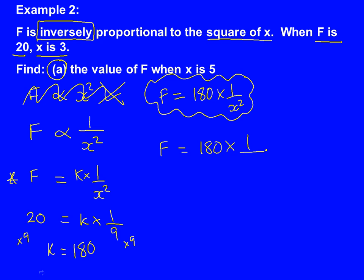So it says find the value of F when x is 5. So all I do is I'll write F equals 180 times 1 over x squared. And we know x is 5. So 5 squared, it's not just 5, it's 5 squared, is 25. Times the tops together: 180 times 1 is 180. And the bottom will become 25. So F equals 180 over 25. We can just leave our answer as a fraction. That's absolutely fine.